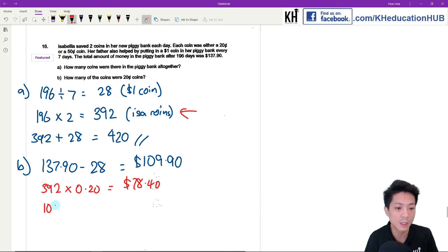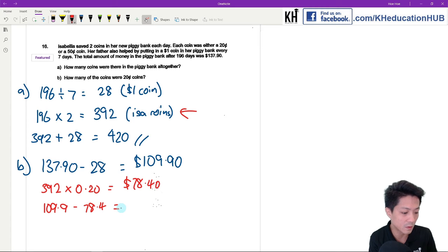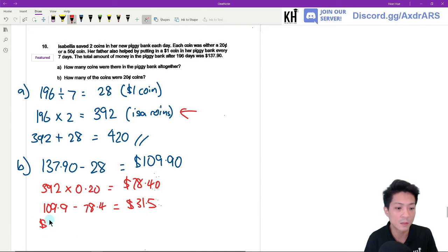Now I'm going to use $109.90 minus $78.40, which is going to give me $31.50. The last step would be to use $31.50 divided by the difference, which is 0.3.